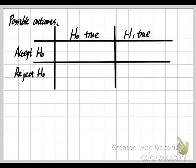About hypothesis testing, what we can do is we can have two conclusions. The first one is we reject our null hypothesis, H0. And the other is we can accept it, or in other words, we failed to reject it.